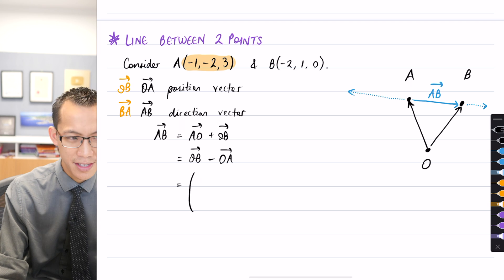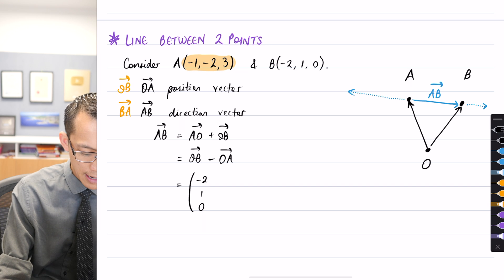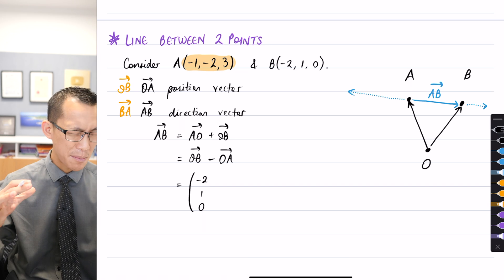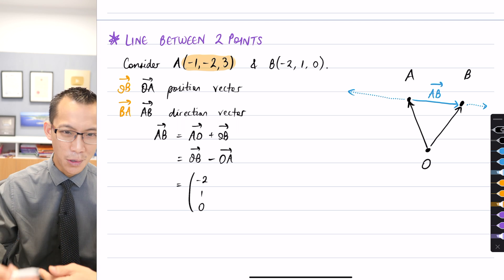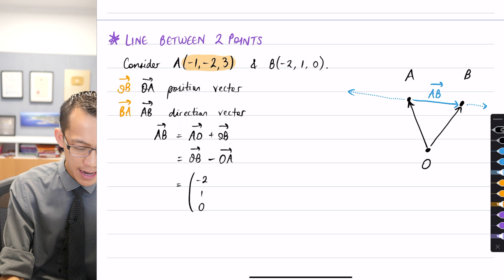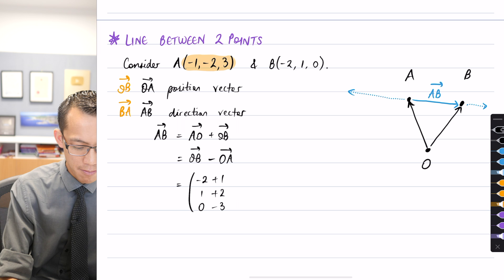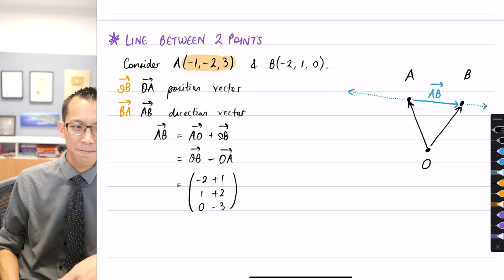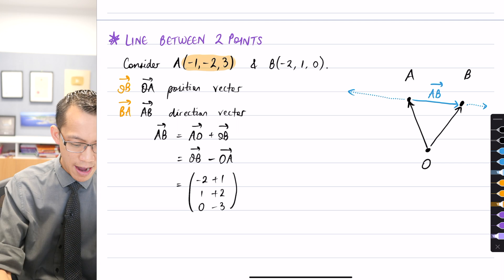Exactly like you just said, AB is the same as OB minus OA. Now this allows me very simply to write out what's going on here. You can see the components above, so OB: I'm just going to write them down, (-2, 1, 0). And then because I'm subtracting OA, I'm going to reverse all the signs I had in the A coordinates. So that gives me plus 1, plus 2, minus 3. You guys okay with that?